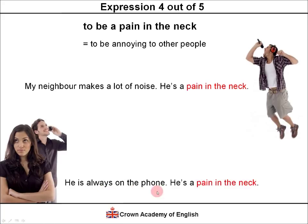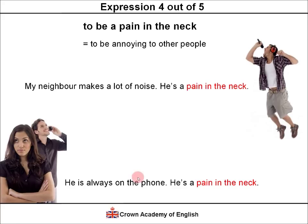Another example: he is always on the phone — he's a pain in the neck. He's always making telephone calls, so he's annoying to us. Notice this expression: if someone is always using the telephone, we use the preposition 'on' — to be on the phone — meaning to always use the phone. He's always on the phone, he's a pain in the neck.